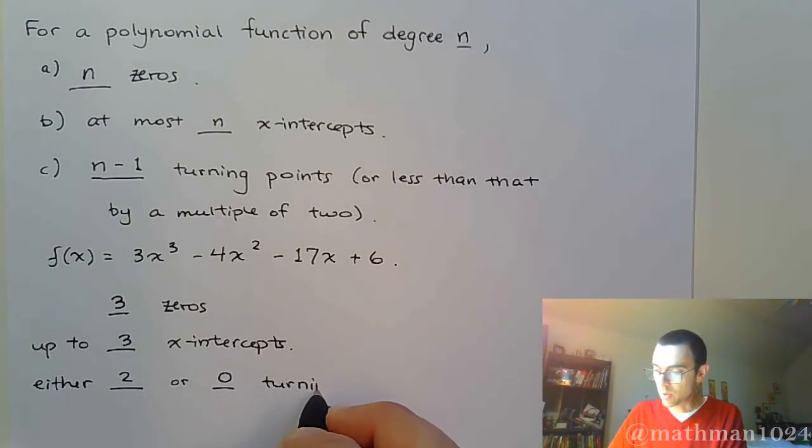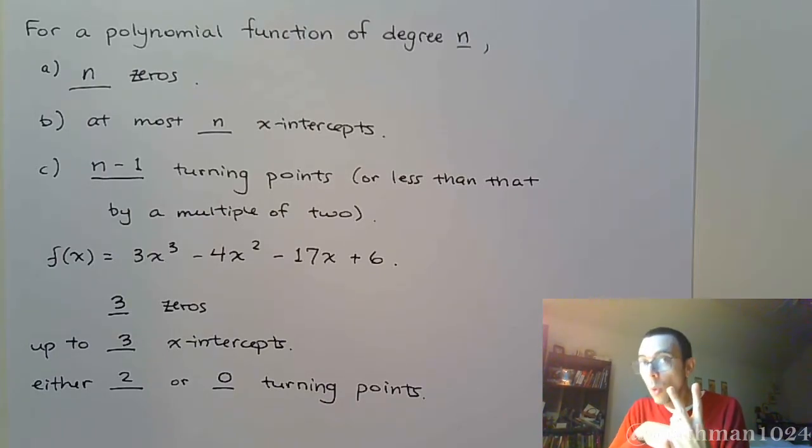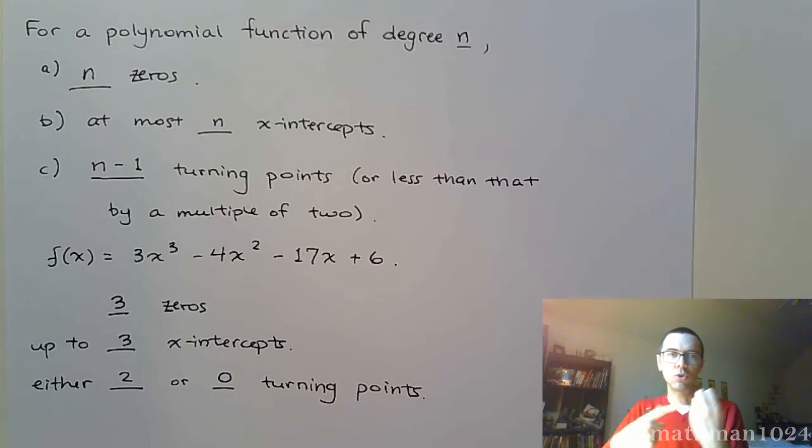So, here is what we know about this graph. We're going to have three zeros. We're going to have up to three x-intercepts, provided they're all real. And the number of turning points is supposed to be n minus one, so you take one away. So, you're going to have two turning points, or less than that by a multiple of two, which would then become zero.